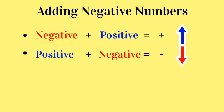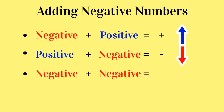To start with a negative number and add a negative number, the plus sign disappears again and you subtract and count down the number scale. When you have a plus sign and a negative sign next to each other, the plus sign will always disappear.